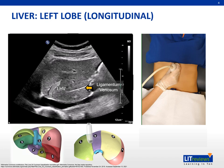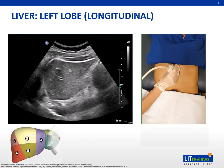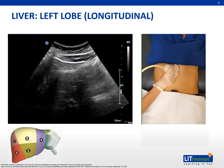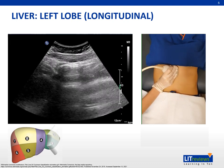The left hepatic vein can be seen draining into the inferior vena cava, which eventually returns the blood to the heart as seen superiorly. Continue angling the transducer to the left to ensure the lateral segments of the left lobe are fully examined.